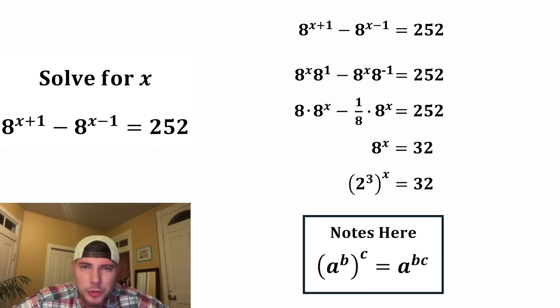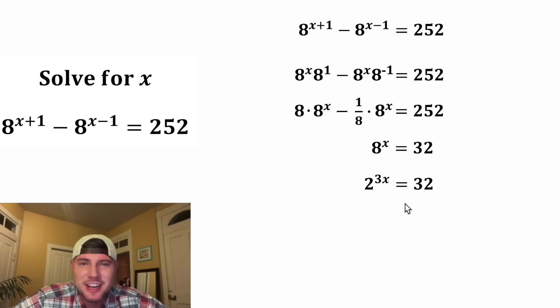Anytime you have A to the B whole thing to the C, you can rewrite that as A to the quantity B times C. 2 to the 3 whole thing to the x, we can rewrite that as 2 to the quantity 3 times x. And on the right-hand side, 32 is the same thing as 2 to the 5th power.